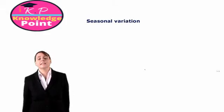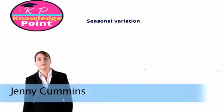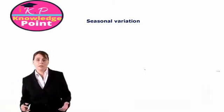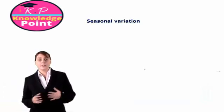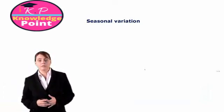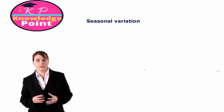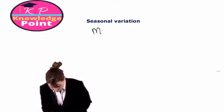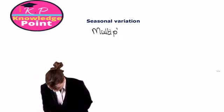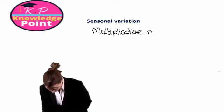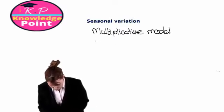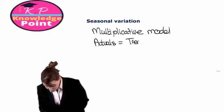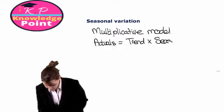In this session, we're going to be looking at calculating our seasonal variations again, but this time we're using the multiplicative model. Our approach is very similar to what it was under the additive model — it's just that the equation we are going to use has changed slightly. If we're using the multiplicative model, we just assume that our actual sales are equal to the trend multiplied by the seasonal variation.